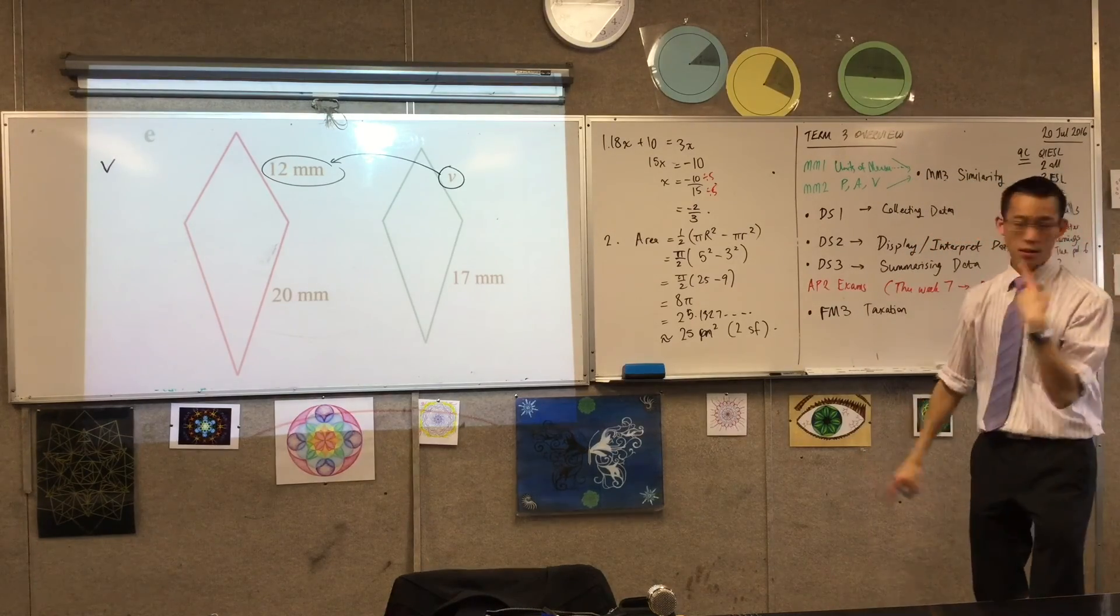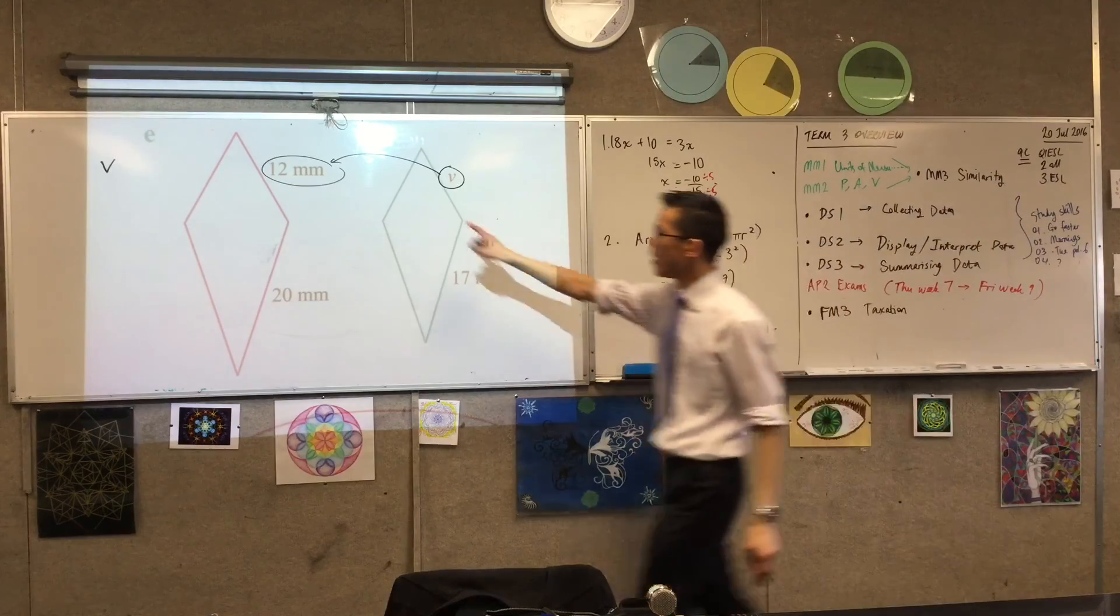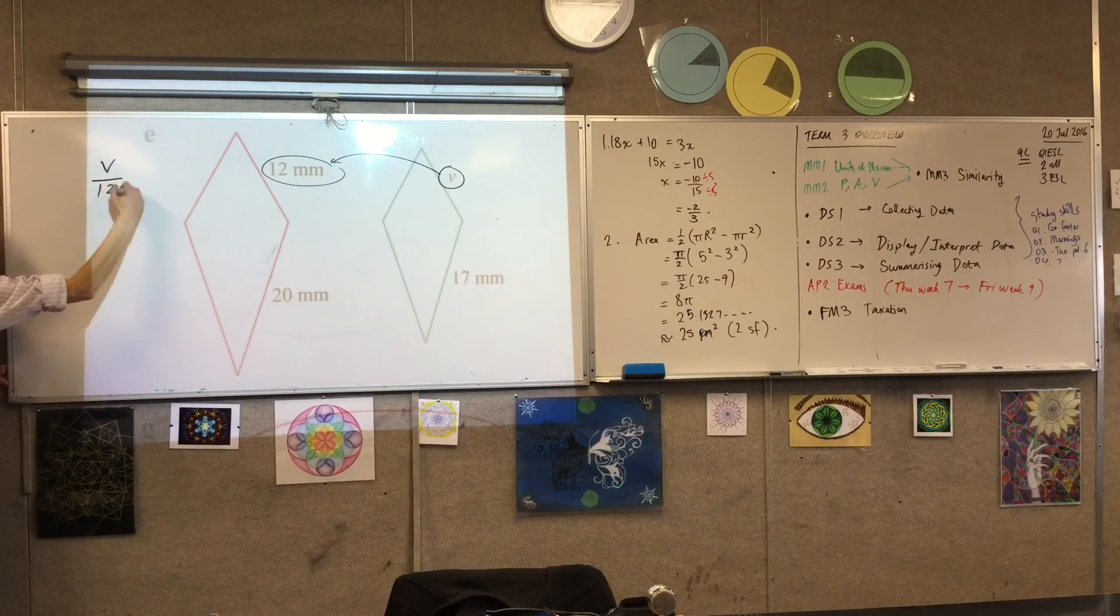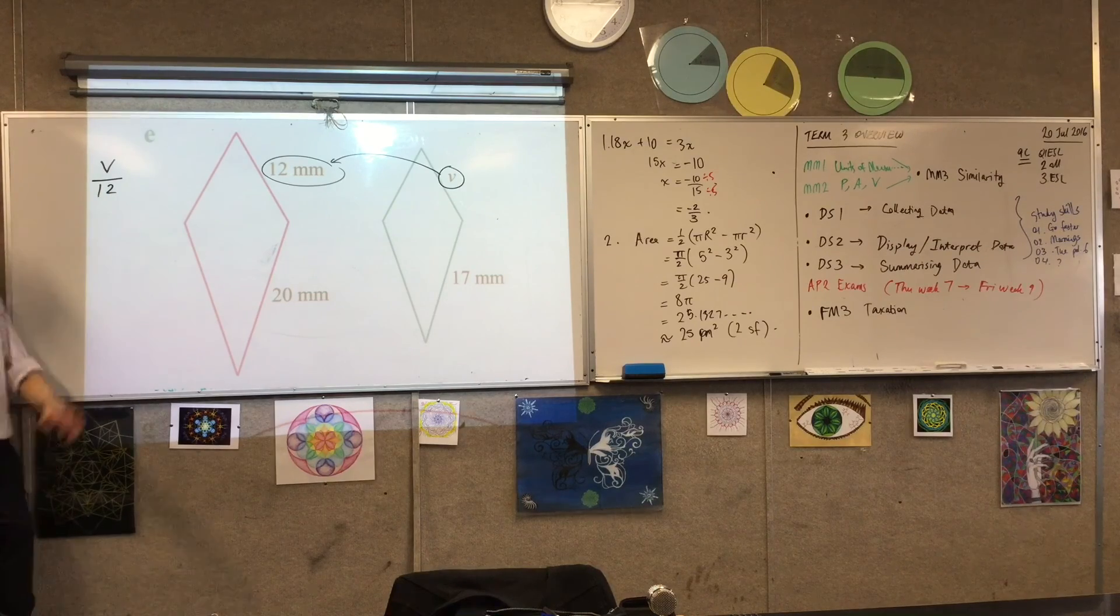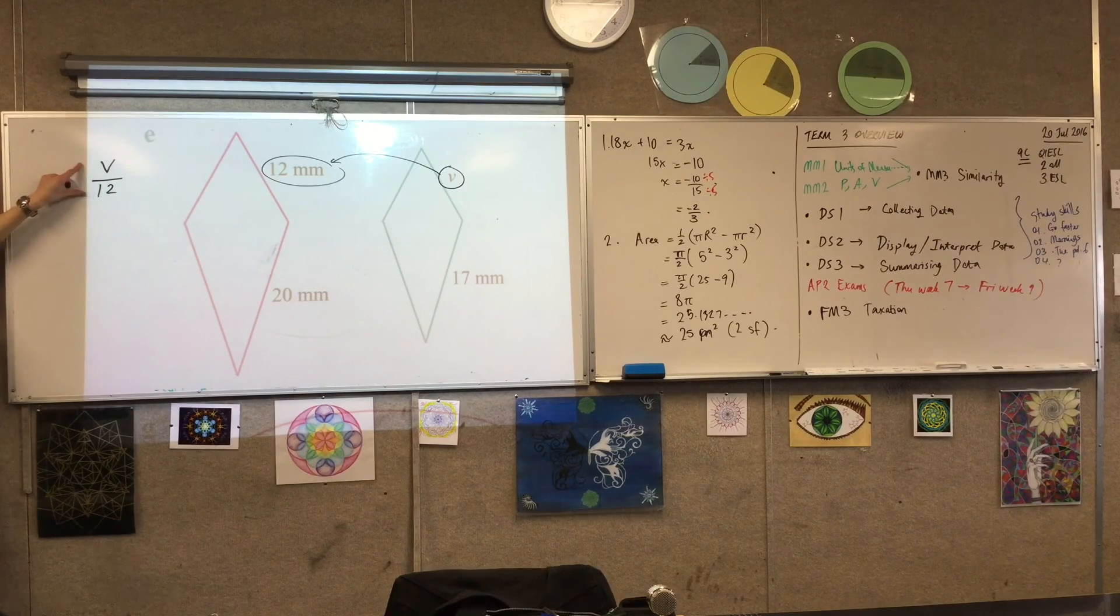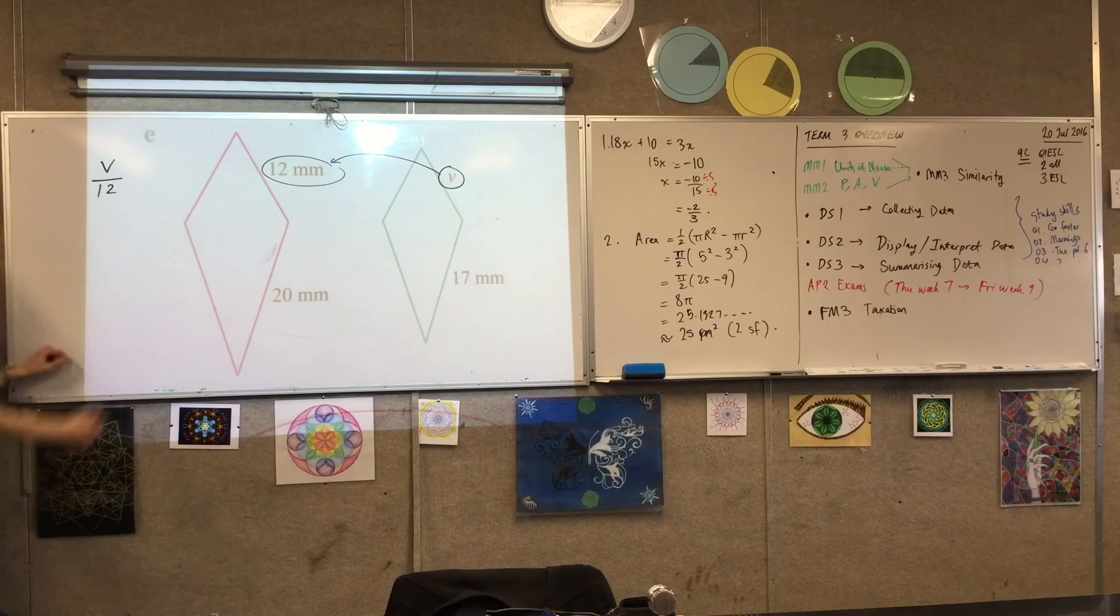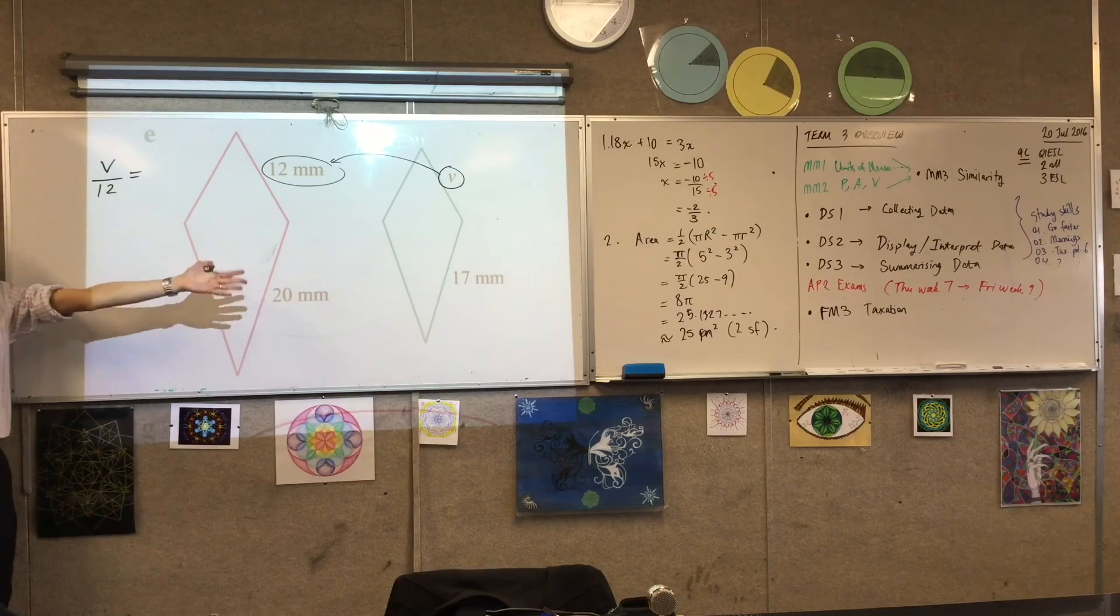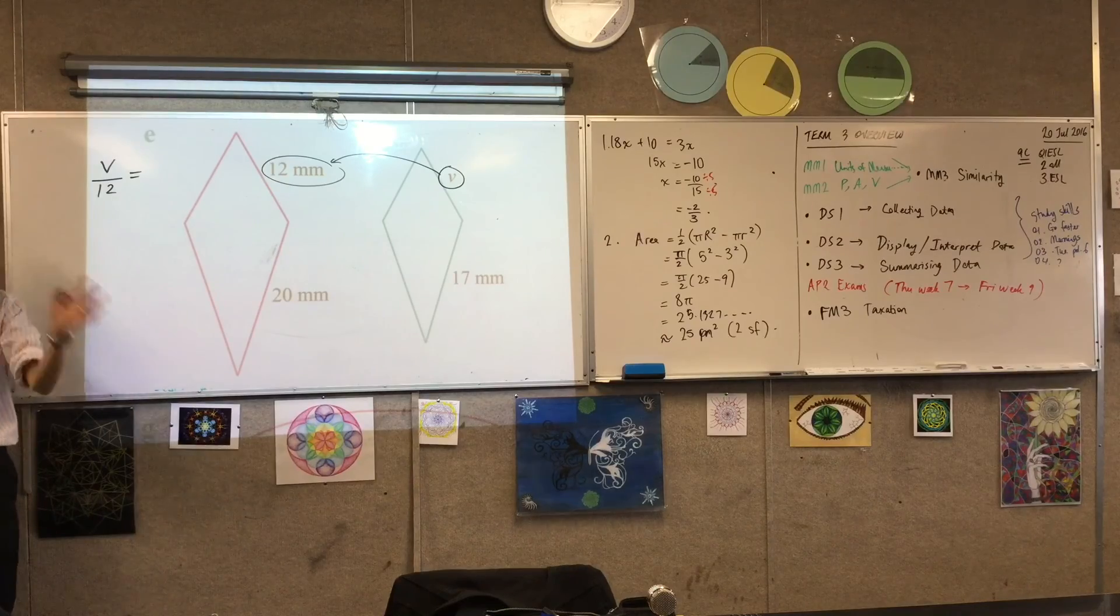Step one, write down the pronumeral you want. Step two, work out which is the corresponding length. It's 12. So what I'm doing is I'm saying, there's a proportion, a ratio between these two, and it should be the same as another proportion, another ratio I can see in the question.